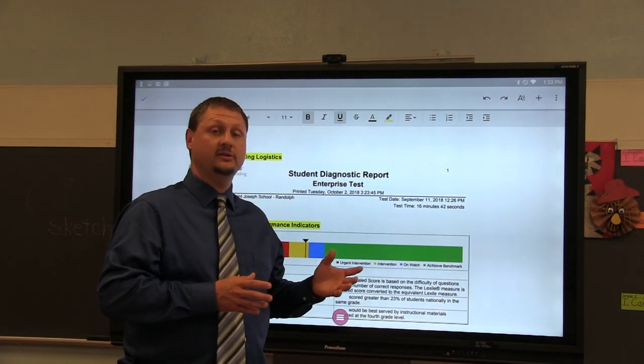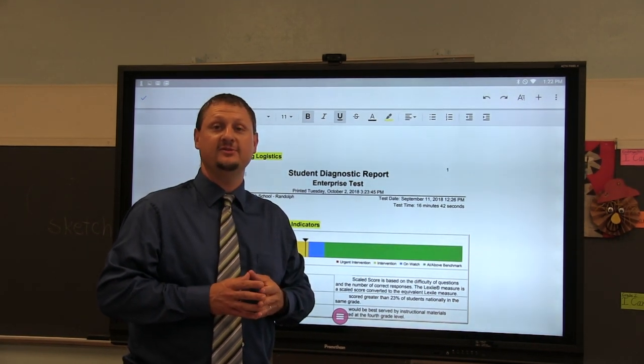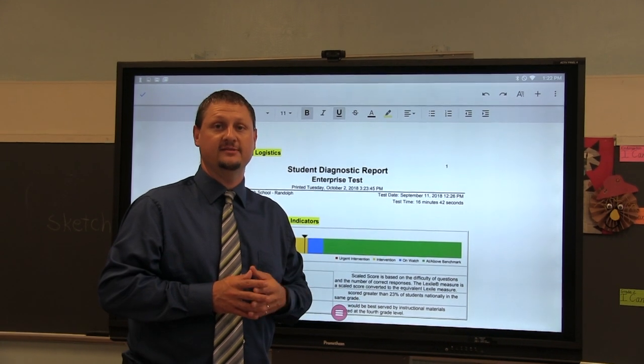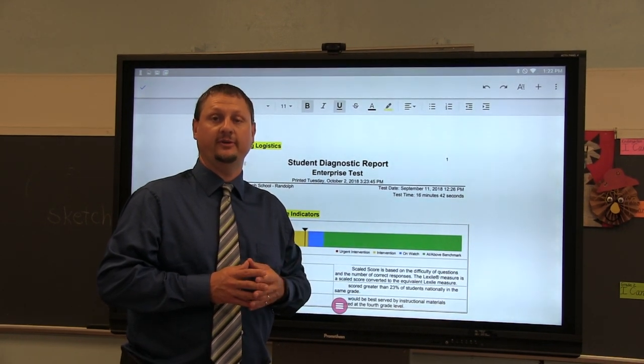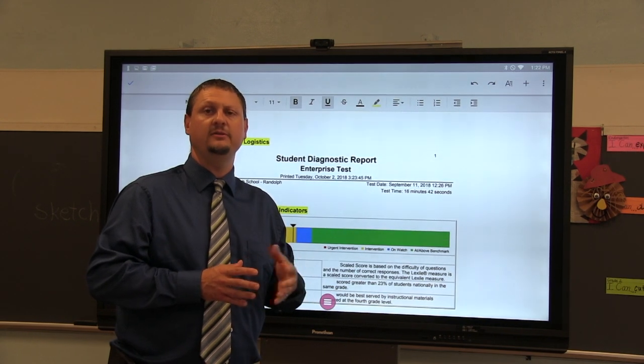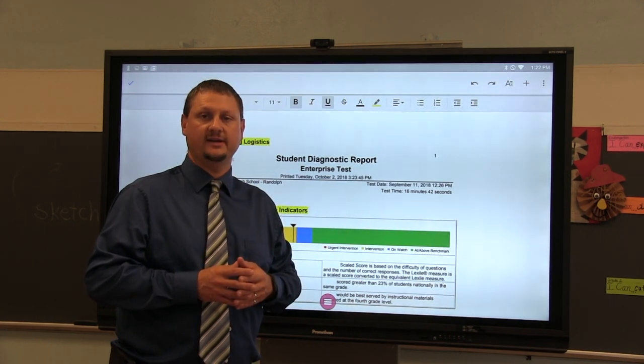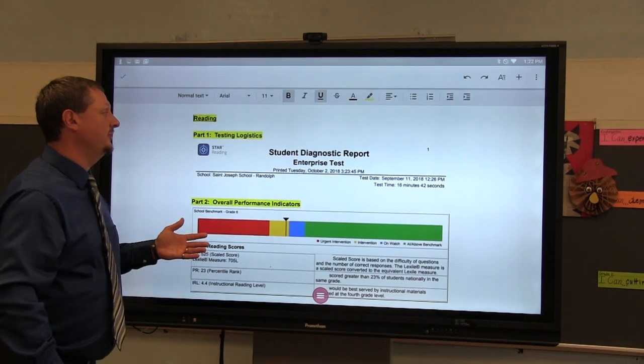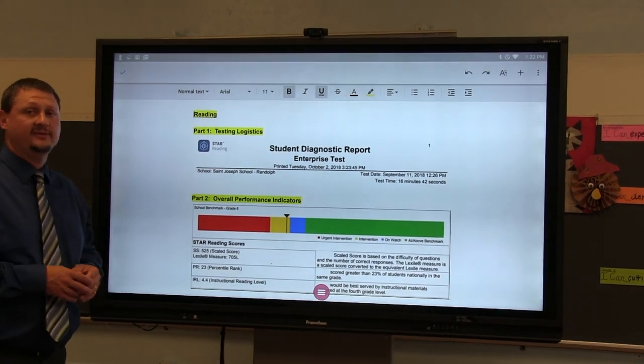So now I want to take an opportunity to actually look at a STAR report and I have removed the student's name for confidentiality reasons but I wanted to break the report down for you because very soon we're going to be sending those reports home to parents and I would like you to be able to understand what that report says. So in essence a STAR report, each STAR report will have three different sections.